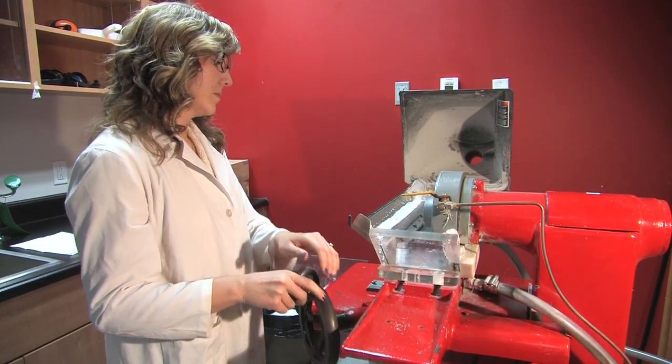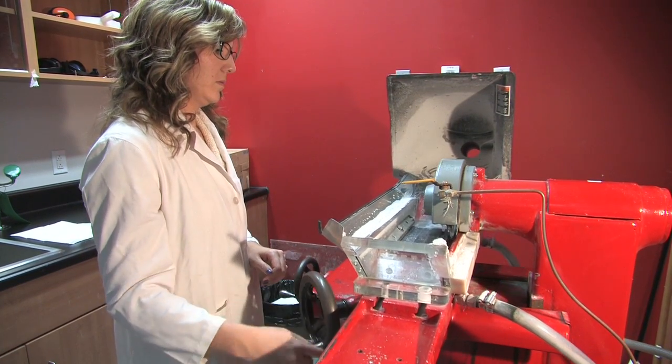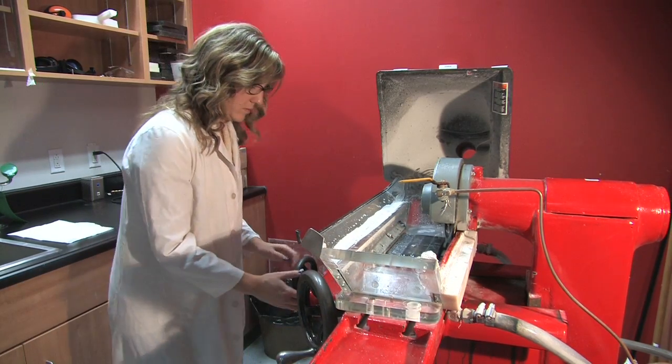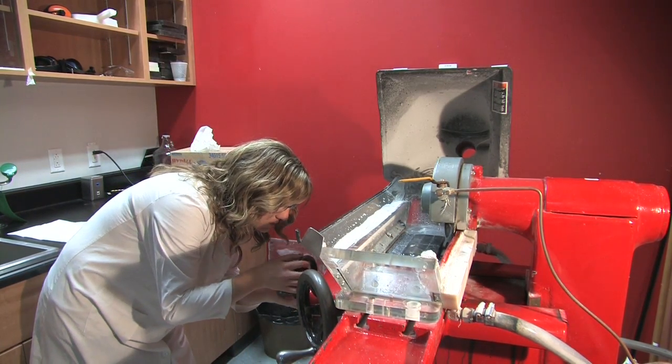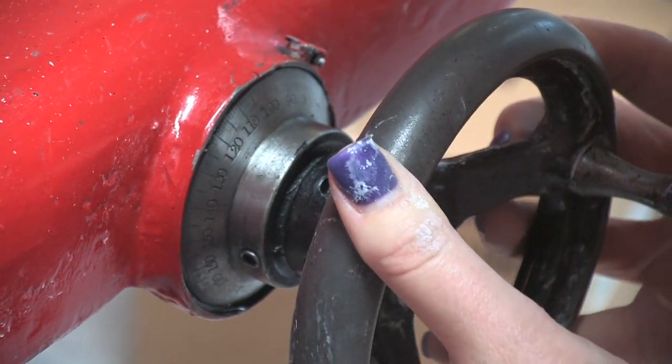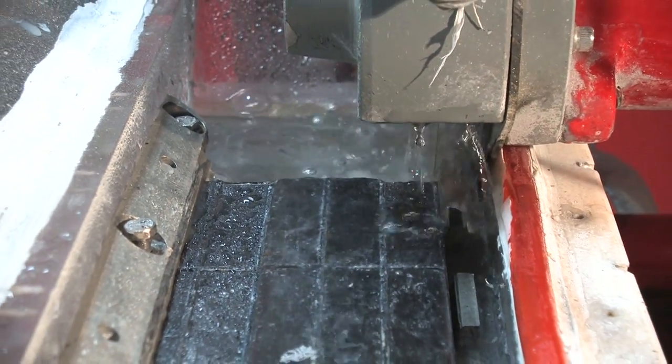Once you make your first cut, move the blade back to the starting position. We are now ready to remove the cores of the otoliths. Move the bed of the saw so that the blade is aligned with the center of the ridge. This is done by turning the small wheel 70 increments. The result is a 1mm section.